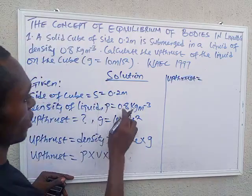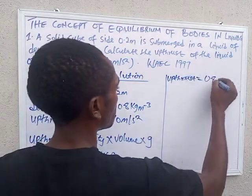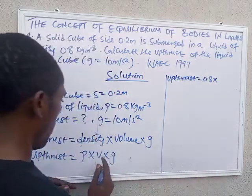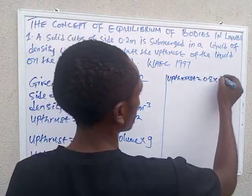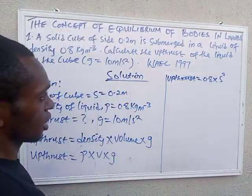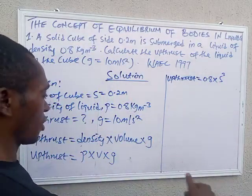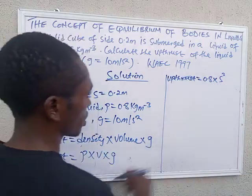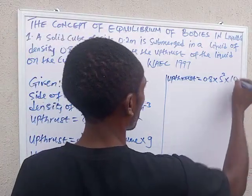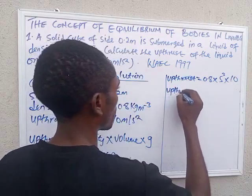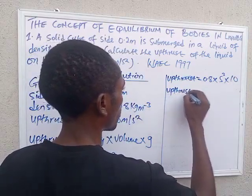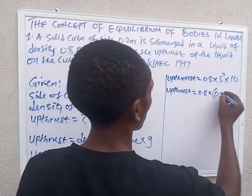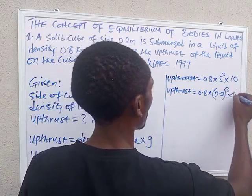The density here is 0.8, times the volume. To get the volume, it is S cubed — the volume of a cube is length times breadth times height, or S times S times S. Times G, which is 10. So our upthrust is going to be equal to 0.8 times 0.2 cubed times 10.